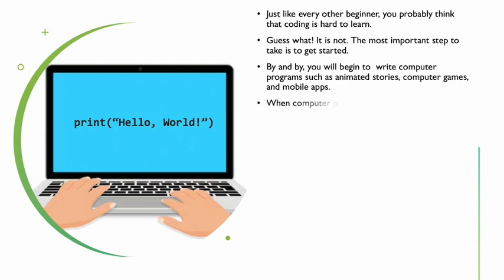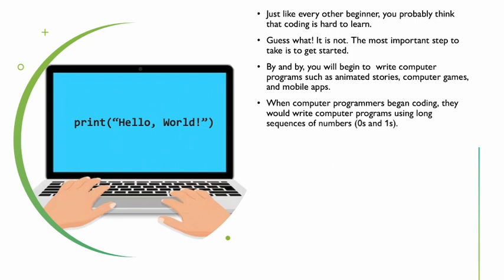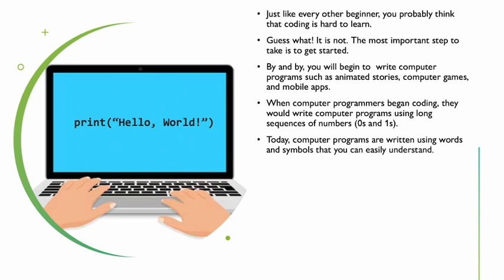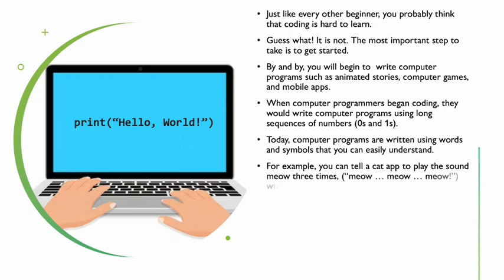When computer programmers began coding, they would write computer programs using long sequences of numbers — zeros and ones. Today, computer programs are written using words and symbols that you can easily understand. For example, you can tell a cat character to play the sound 'meow' three times.